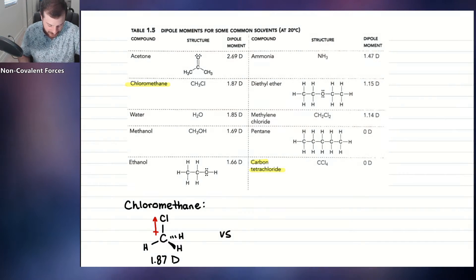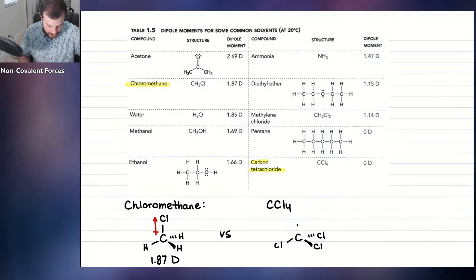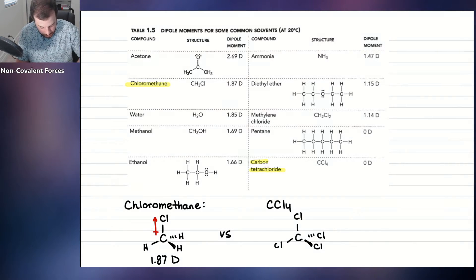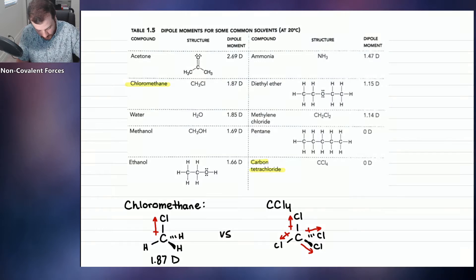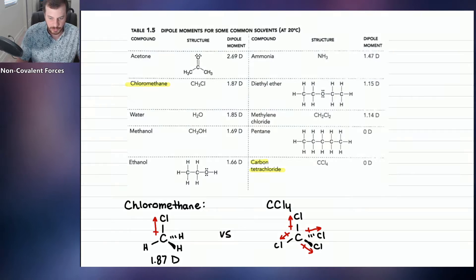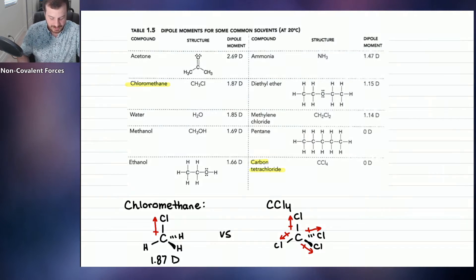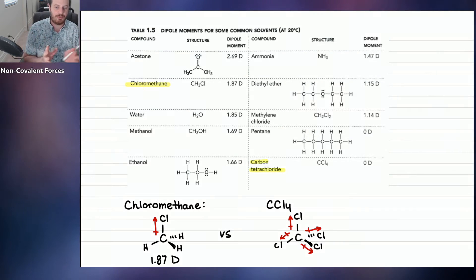It's not that CCl₄ has no dipoles — it actually has four. It's just that all the dipoles cancel because they point in opposite directions symmetrically. There is no net dipole moment. This leads to another type of question: not just identifying polar covalent bonds, but drawing the net dipole moment for a given molecule.